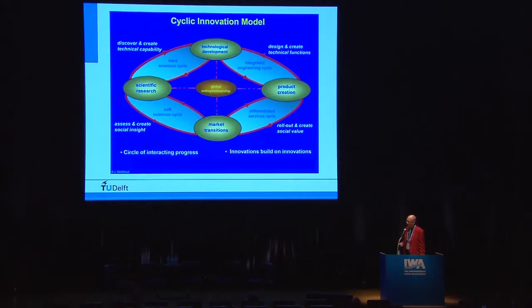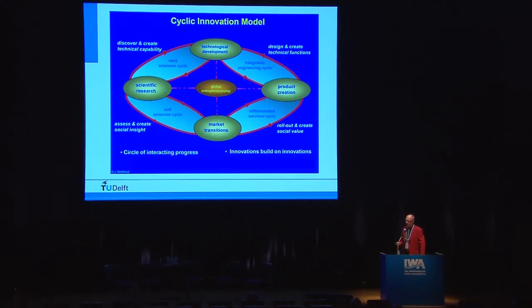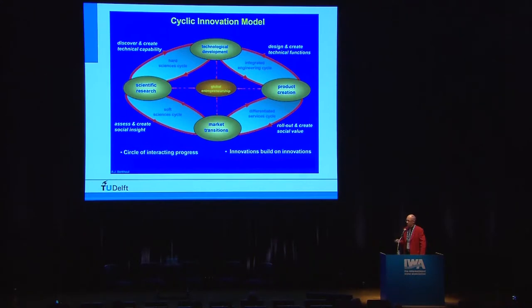A better model — which I cannot explain in full detail — works much better, where there's a need for interactions between engineers, scientists, product developers, and market people in different interaction cycles. We don't need to talk all the time together, but it should be recognized. Many inventions which fail have some lack in communication between these different areas.